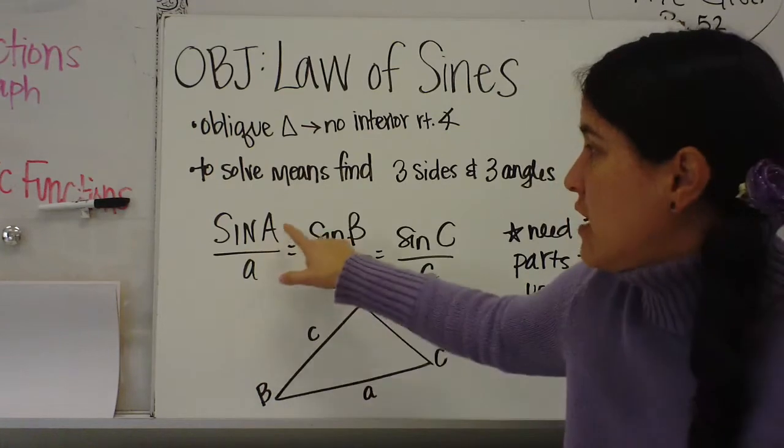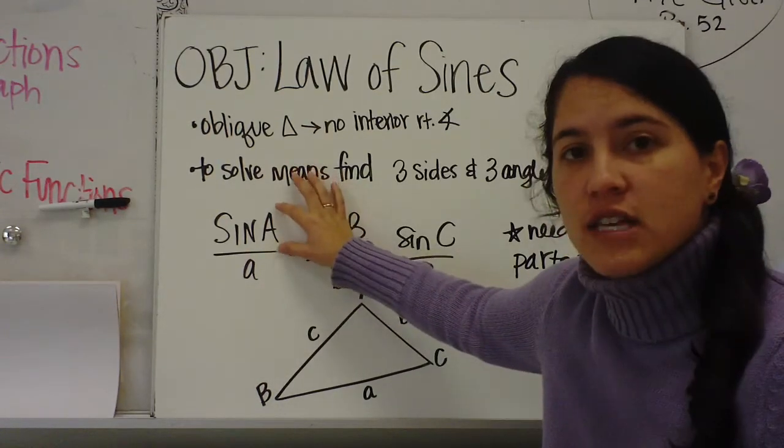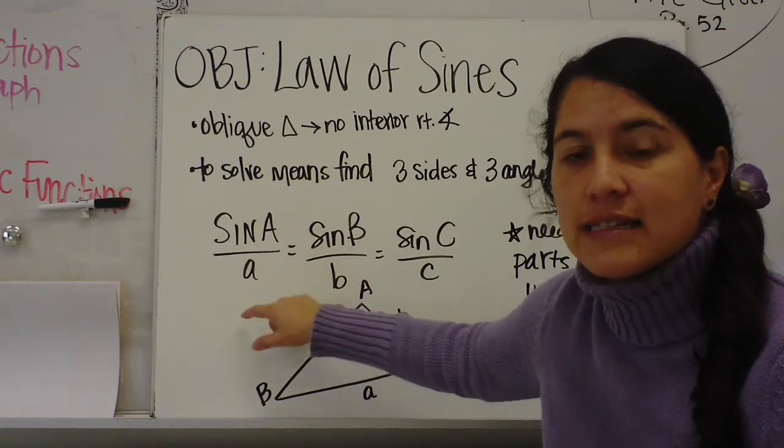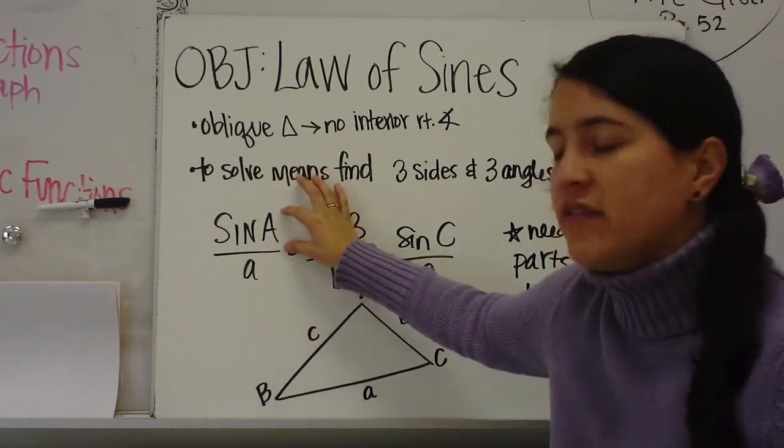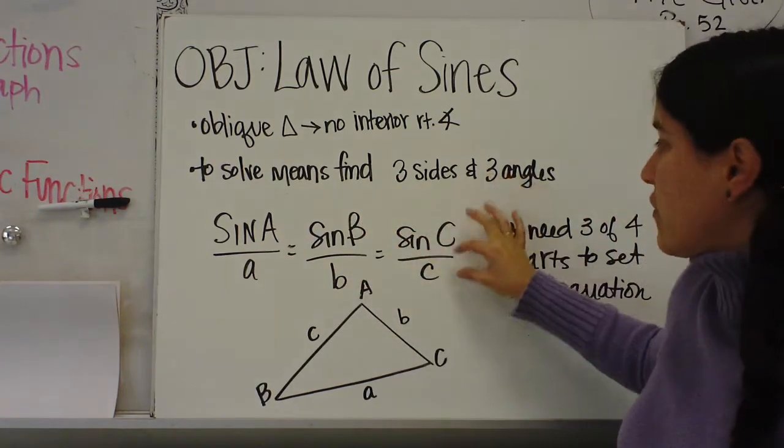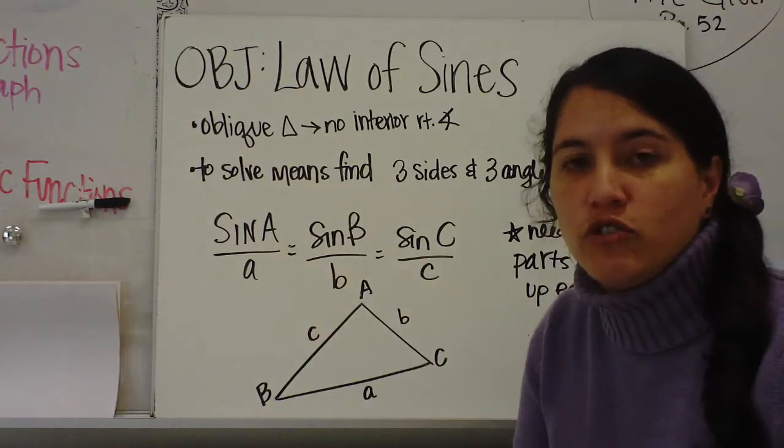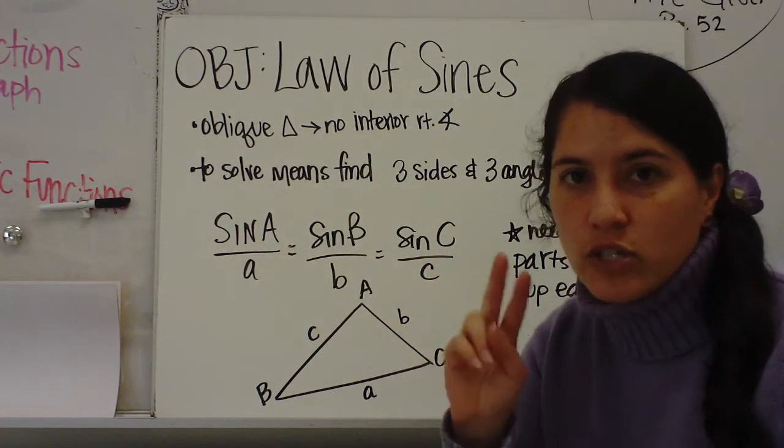Here is the Law of Sines: sine of angle A over a. Now remember, capital letter is the angle, lowercase a is the side. So sine of A over a equals sine of B over b equals sine of C over c. You can see that I have three ratios here, but when you are working to solve you're only going to use two. You would only use two of the ratios.